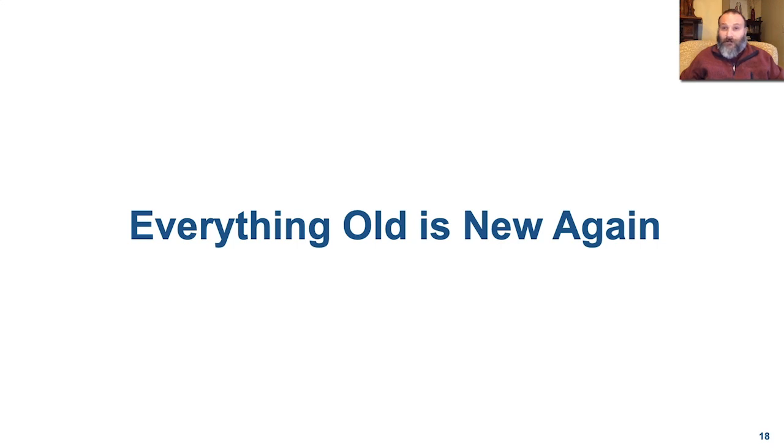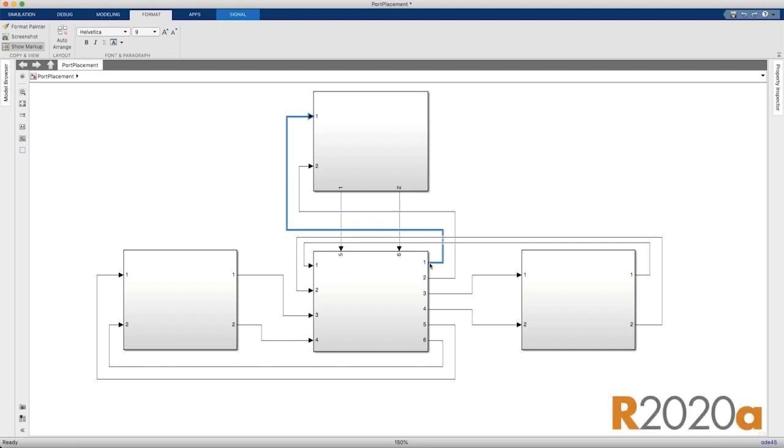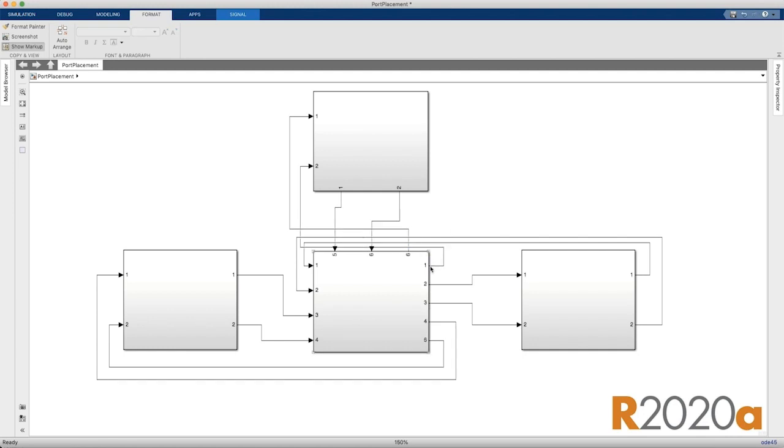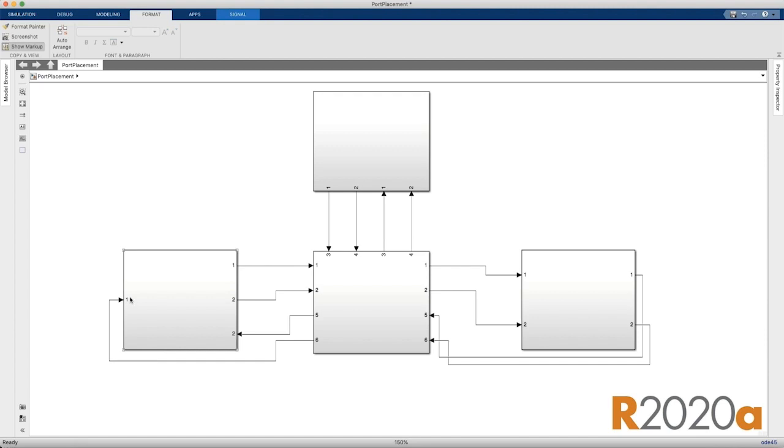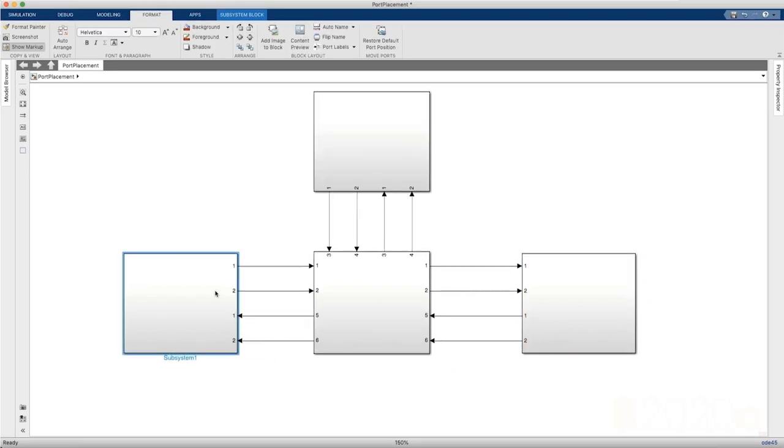Before I wrap up, I want to show you two new old features. For many physical models, lines are difficult to manage because we keep inputs on the left and outputs on the right. As of 20A, you can simply drag ports on subsystems and model references to whatever side makes the most sense for your model. This will result in much cleaner layouts, particularly in physical models where this makes a lot of sense.